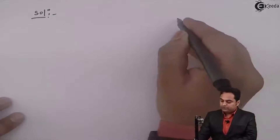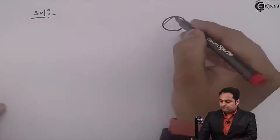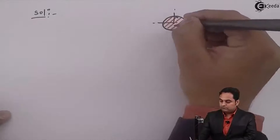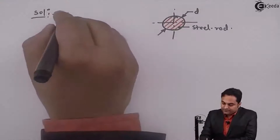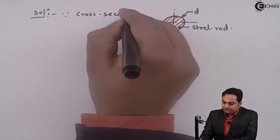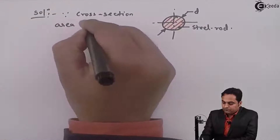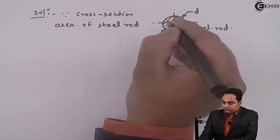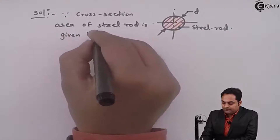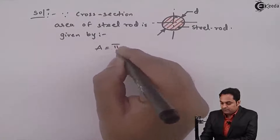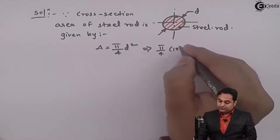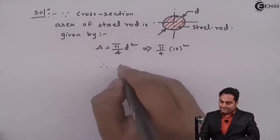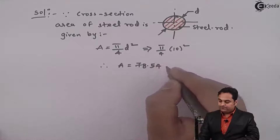In the solution, since it is given that there is a steel rod, I will draw the cross section. The cross-sectional area of the steel rod is given by A = π/4 × D². That becomes π/4 × 10², which gives 78.54 mm².